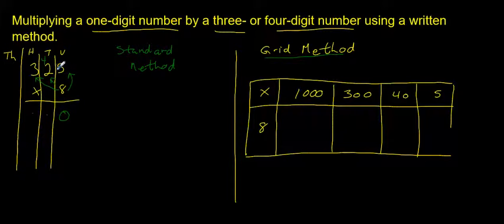8 times 20 is 160, add 40 is 200. 300 times 8 is 2,400, plus another 2 is 2,600. So it's 2,600.